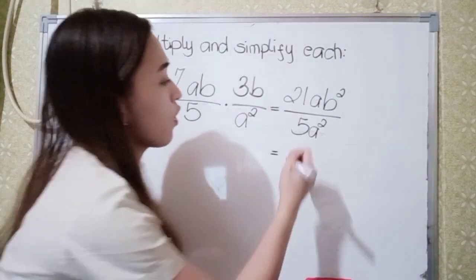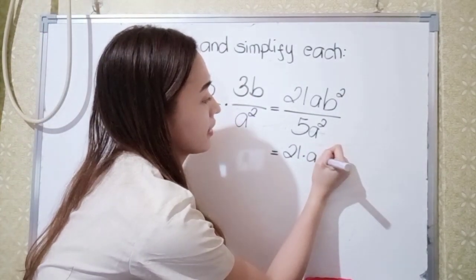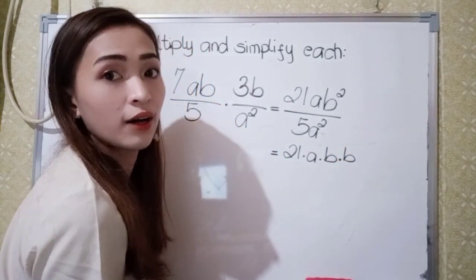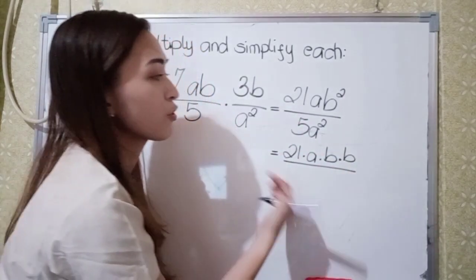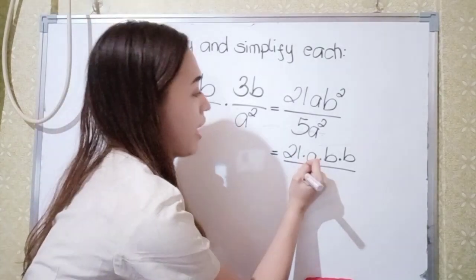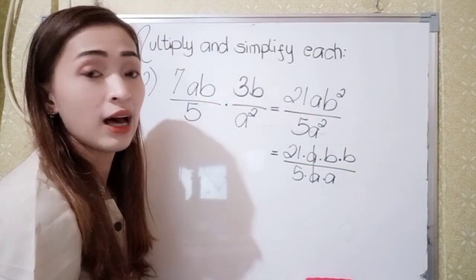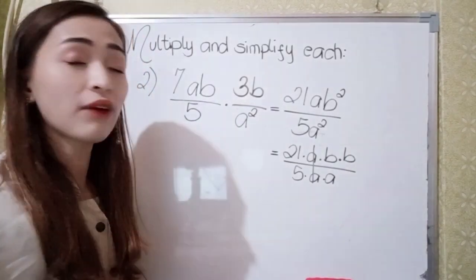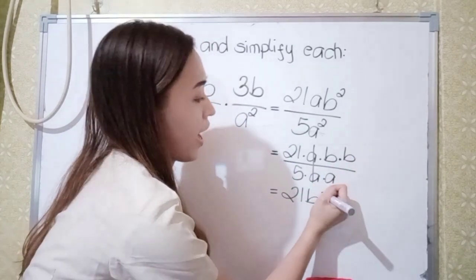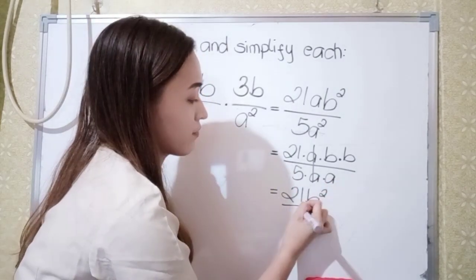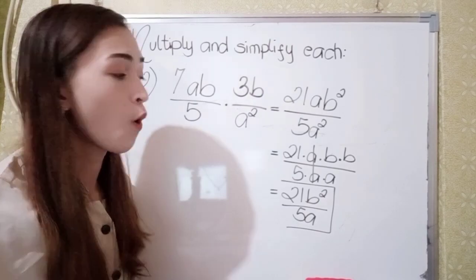Now let's simplify. The factors of 21ab squared are 21 times a times b times b. The factors of 5a squared are 5 times a times a. Since a divided by a is 1, that cancels. Our final answer in number 2 is 21b squared over 5a.